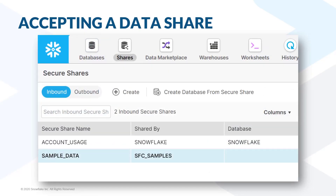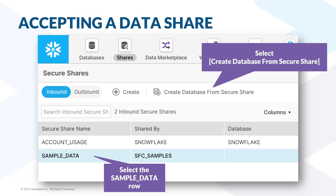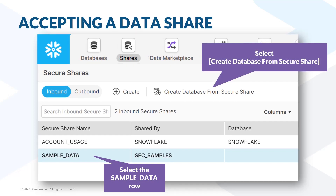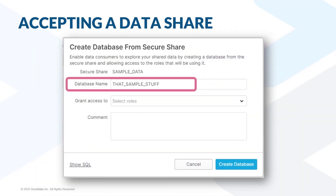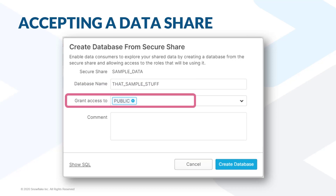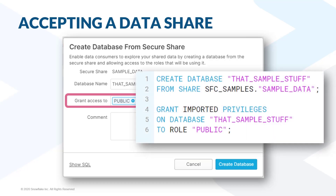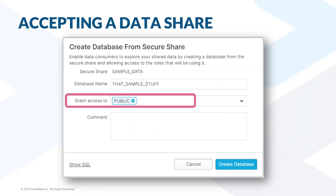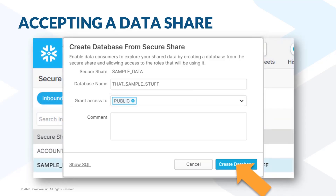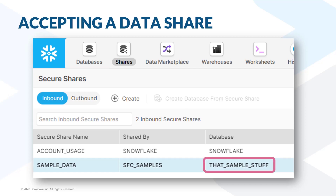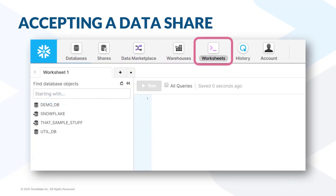We can think of the database name given to a share as our way of accepting that share into our account. If you give the share a database name, it will appear as a usable data source. To bring back the sample data, select the share row and click create database from secure share. A dialog will appear where you put a new name for the share — in this case, we chose to type that sample stuff. In the second field, called Grant Access To, you'll choose one or more roles to give access. Shares have read-only privileges that are imported as part of the sharing process, and you assign those imported privileges to one or more roles. We've chosen to open this share to the public role. When we close the wizard, we see our new name for the share appears in the database column, and if we navigate to the worksheets area and refresh, sample stuff appears as a database in our navigation pane.